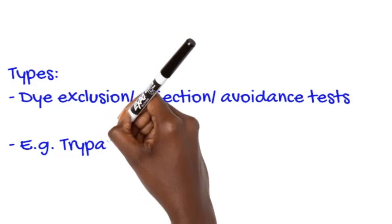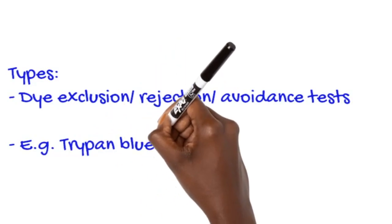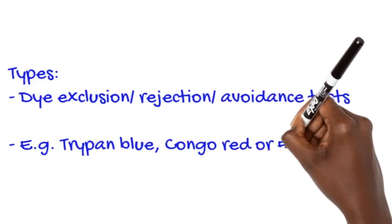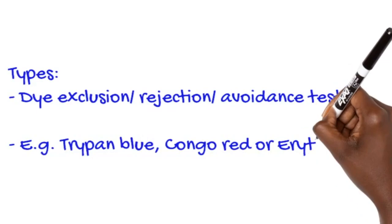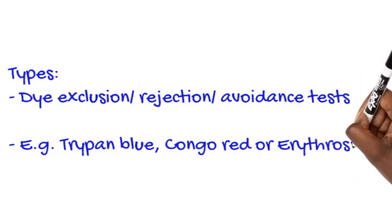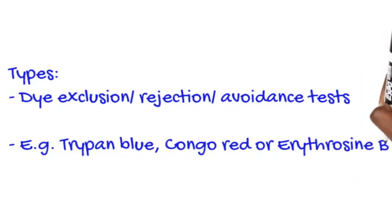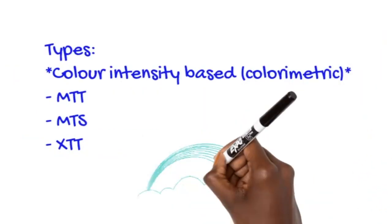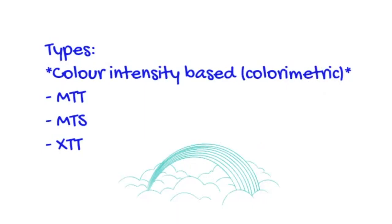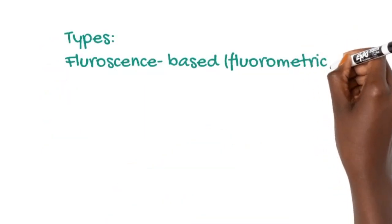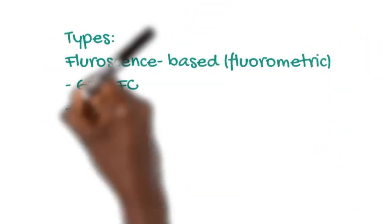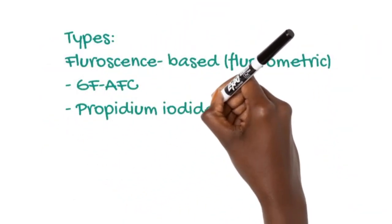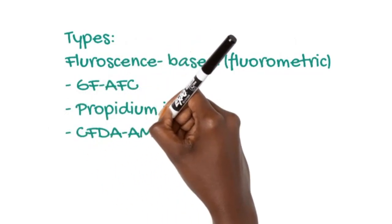Identifying the best cell health assay method to suit your needs requires an understanding of what each assay is measuring as a marker, how the measurement correlates with cell viability, and what are the limitations of the assay chemistries. In general,